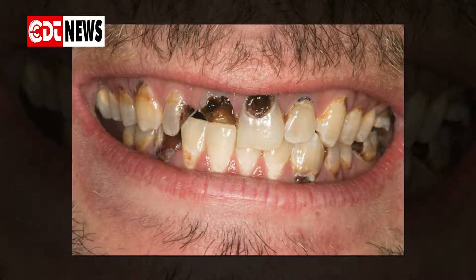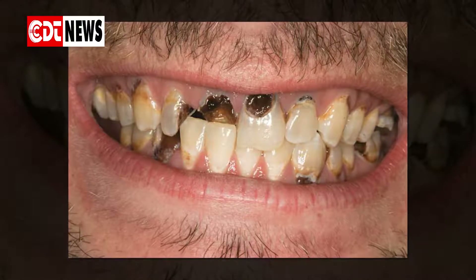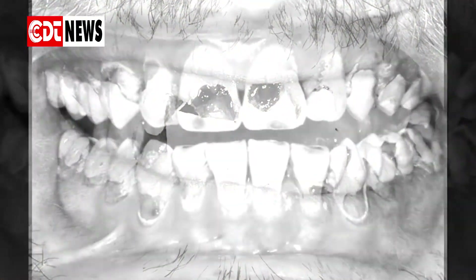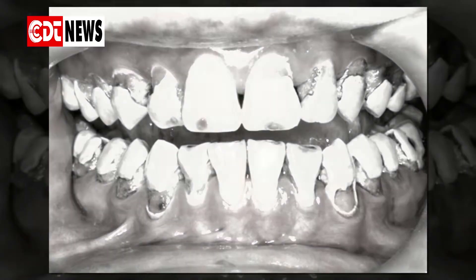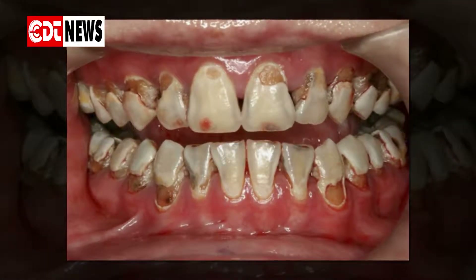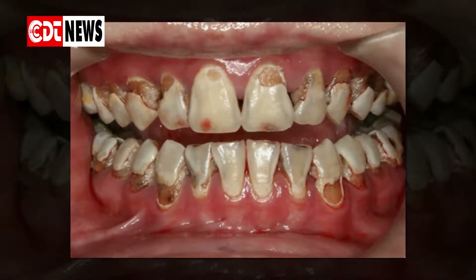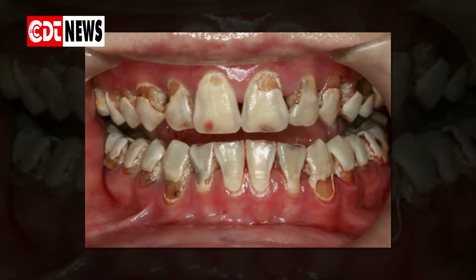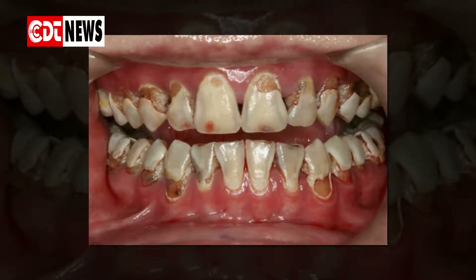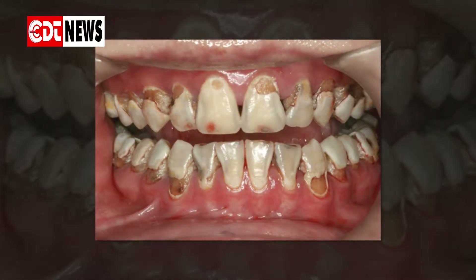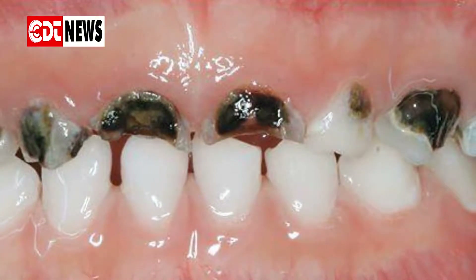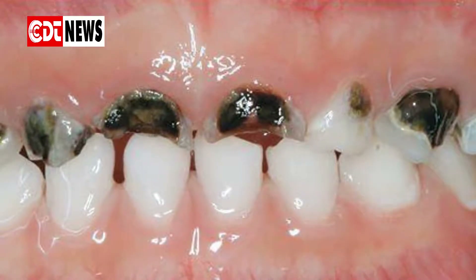Adolescent rampant caries typically occurs in those who go to sleep sucking on chocolates, hard candies, or other cariogenic food items. Xerostomia induced rampant caries have been found to occur due to the irradiation of the neck and head area, and also mostly because of the hypo-functioning of the salivary gland.